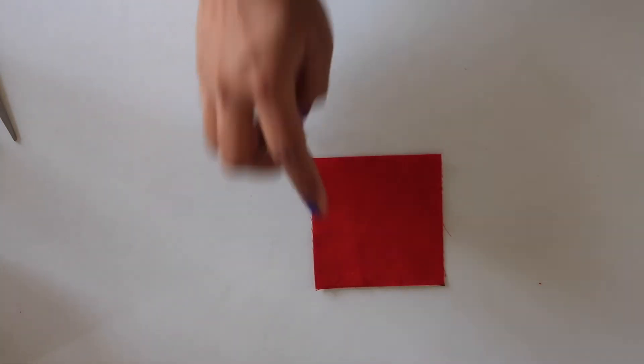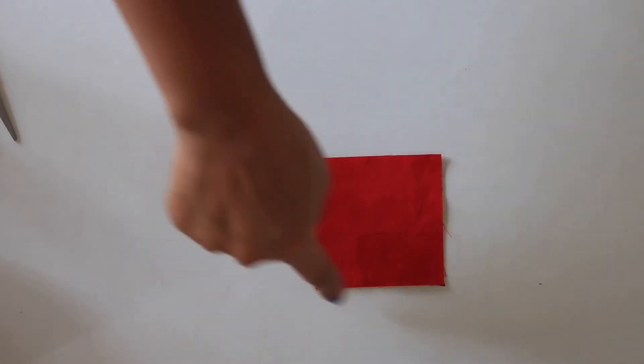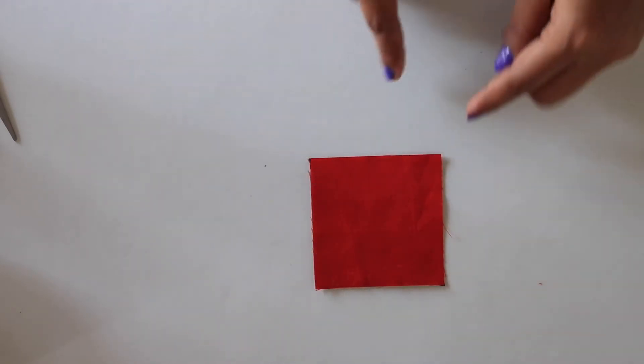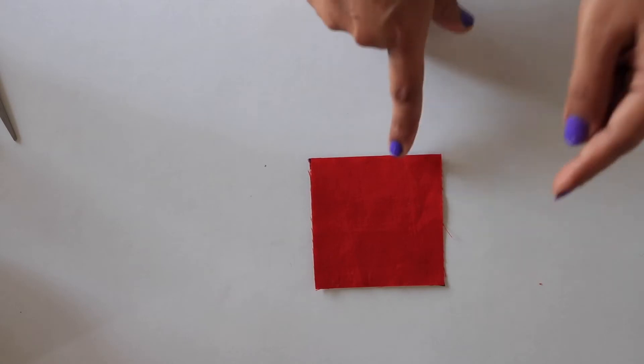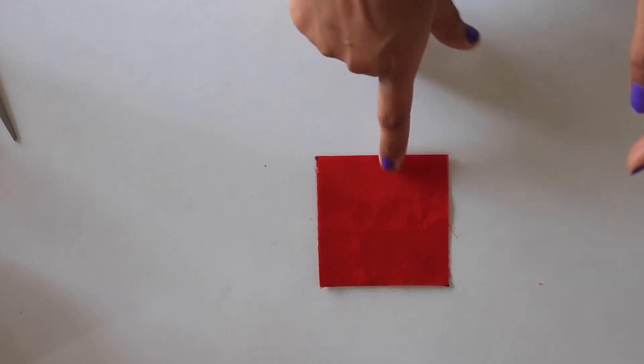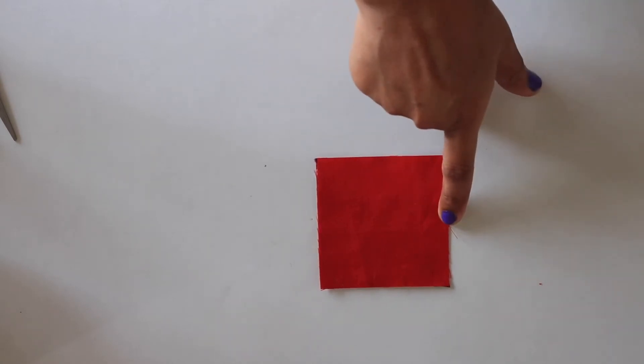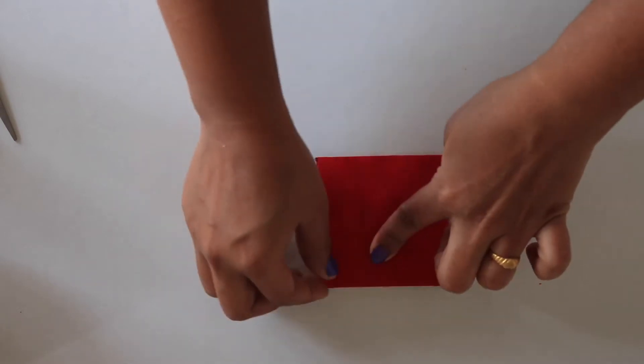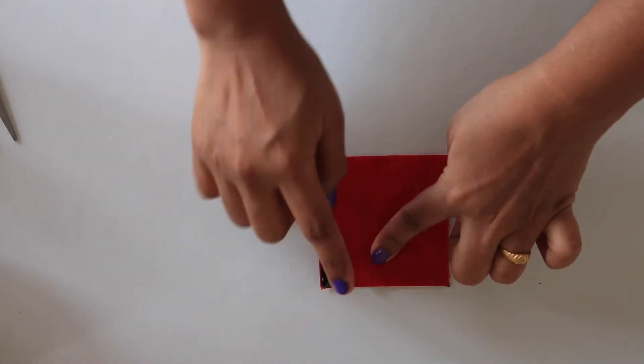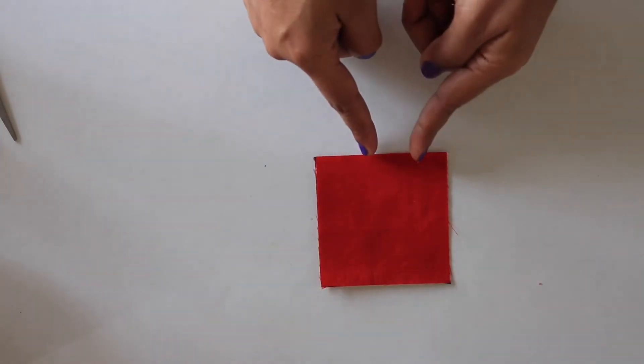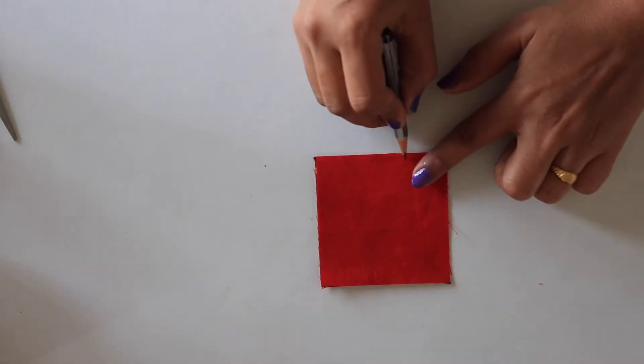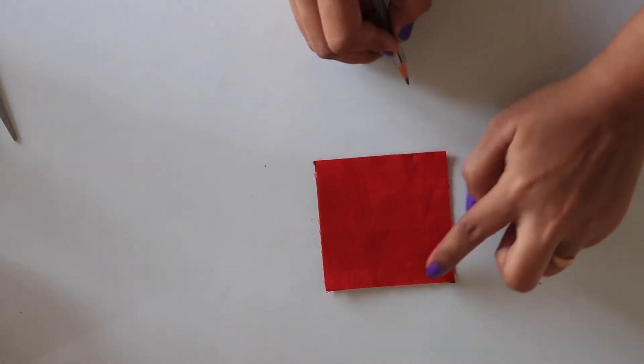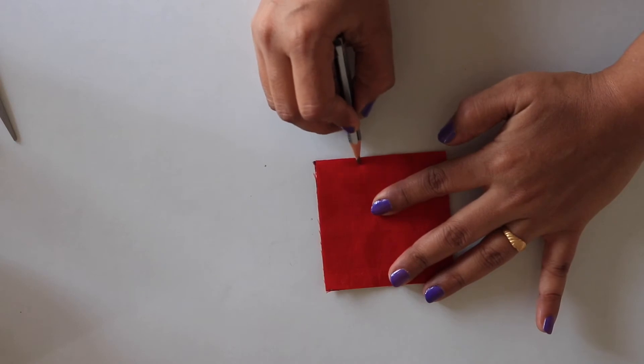Pin your layers together and sew with ¼ inch seam allowance around the entire edge leaving small opening. Make sure this opening is on one of the 2 sides with only 2 layers and not on the triangle sides so that it will be easier to close the opening after turning the bookmark right side out. Leave a gap of 1½ inch.